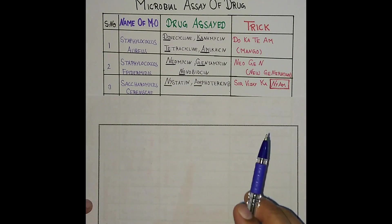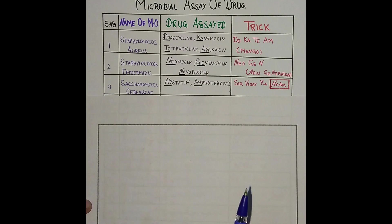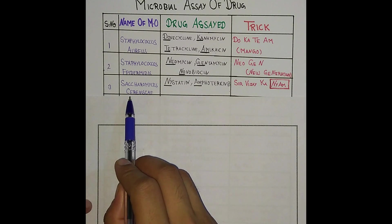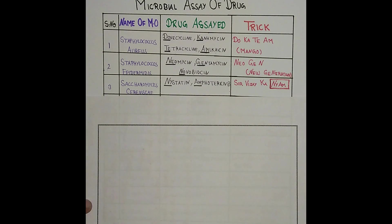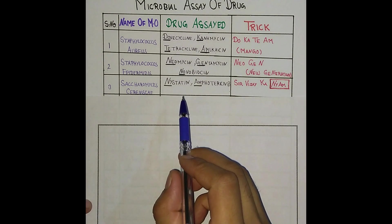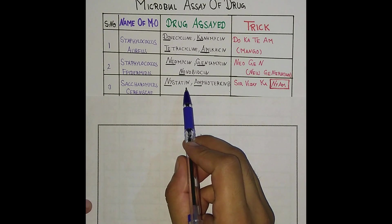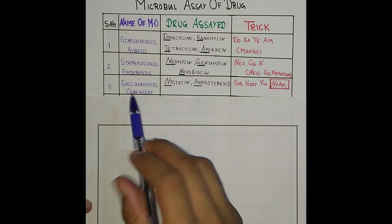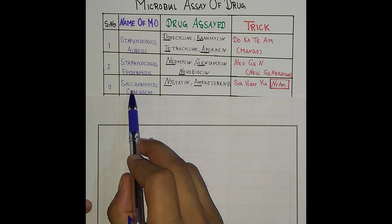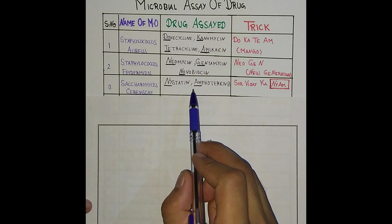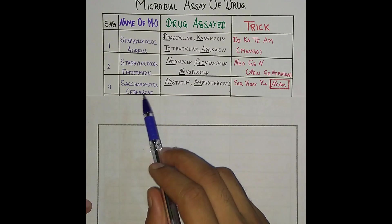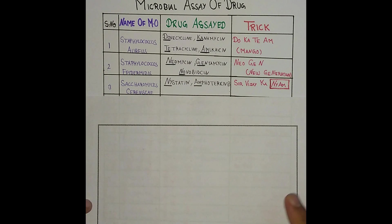Students, questions may be asked like this: for Nystatin, which microbe is used for the assay? You are given a drug name and must tell the microorganism, or given the microorganism, you must tell which drug is used for its assay.